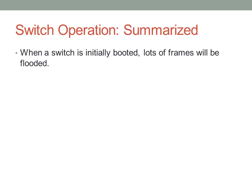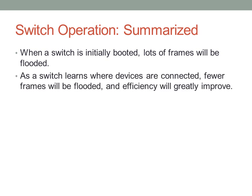When a switch is initially booted, lots of frames will be flooded because the switch hasn't received any frames from any devices yet and doesn't know where they are. Gradually, as it receives more frames, it will stop flooding because it receives frames from different devices and builds a bigger MAC address table. Finally, in a stable network topology that's been running for a while, the switch will know where all of its connected devices are and be able to switch frames directly. Efficiency greatly improves over time with switches.